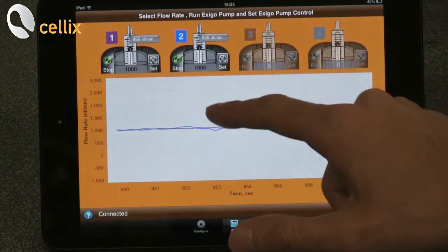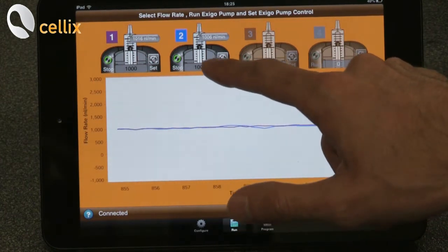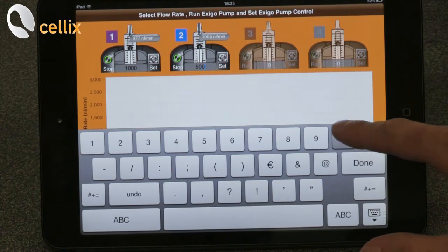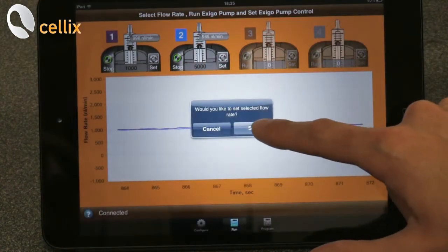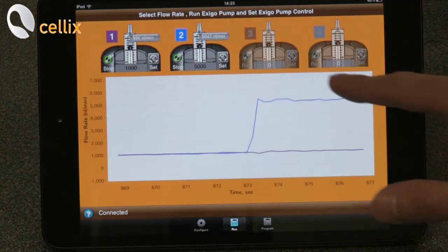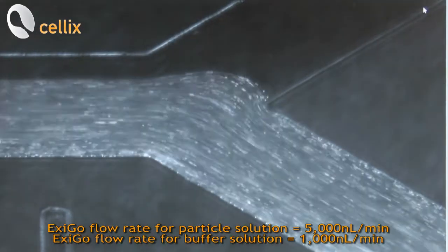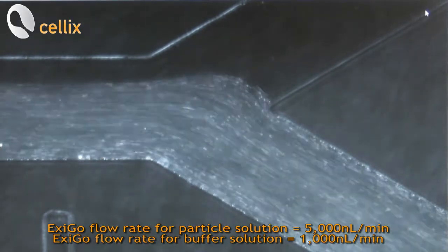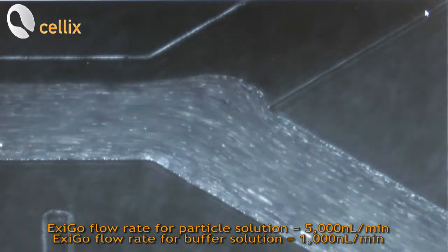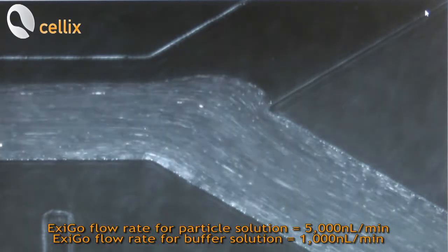We can try also to change the flow rate of the syringe which is perfusing the particles. So we click here. We can select for example 5000 nanoliter per minute. We click done. Set. And as we can see on the graph there is a variation. As we can see here now with the new flow rate, the interface results to be shifted towards one side because the flow rate of the particles is actually increased to 5000 nanoliter per minute.